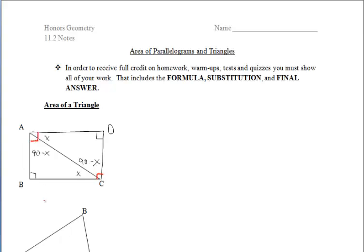But then if we combine those two angles — the x and 90 minus x — the x's will eliminate, which would leave us with two more 90 degree angles. So we have indeed created a rectangle. So if we double our right triangle, we end up getting a rectangle once we manipulate, flip, and put it together. Can we all agree that the area of that right triangle would have to be half of the area of rectangle ABCD?